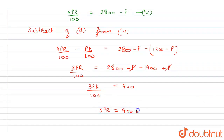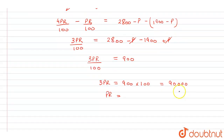So 3PR = 900 × 100 = 90,000. Therefore PR = 90,000 ÷ 3 = 30,000. This is the value of PR.